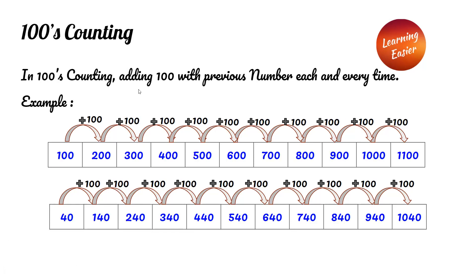Hundreds counting. In hundreds counting, we add one hundred with the previous number each and every time. One hundred forty plus one hundred equals two hundred forty, two hundred forty plus one hundred equals three hundred forty, three hundred forty plus one hundred equals four hundred forty, and so on.